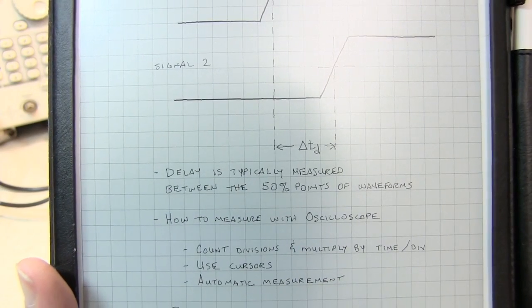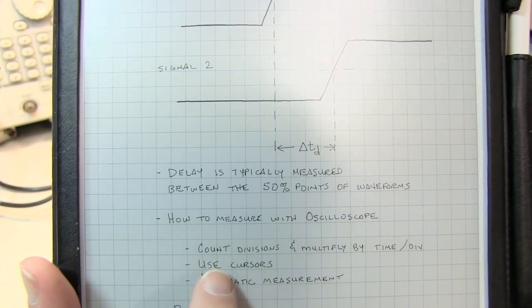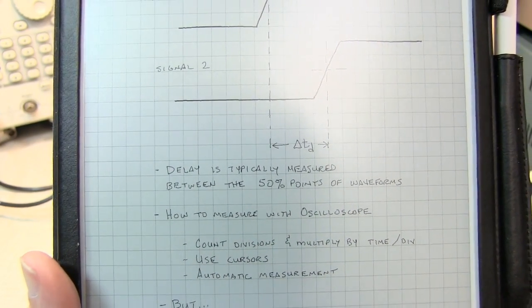Of course, most of the time these days, we're using modern digital scopes, and they will typically have an automatic measurement. Let's go take a look at that.